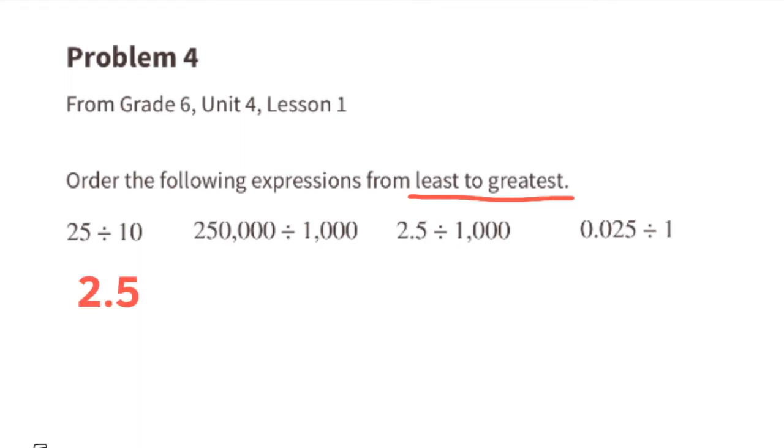250,000 divided by 1,000 is 250. 2.5 divided by 1,000 is 0.0025.